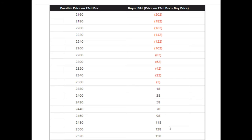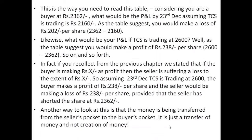The table shows possible prices on 23rd December and the buyer's profit and loss. You can see here that when the price is 2160, the buyer's profit or loss is minus 202 — a loss. Possible prices go up to 2520, where the buyer can get a profit of 158. Red color indicates a loss. This is how you read the table: considering you are a buyer at rupees 2362, what would be the profit and loss on 23rd December if TCS is trading at rupees 2160? You simply subtract: 2362 minus 2160.